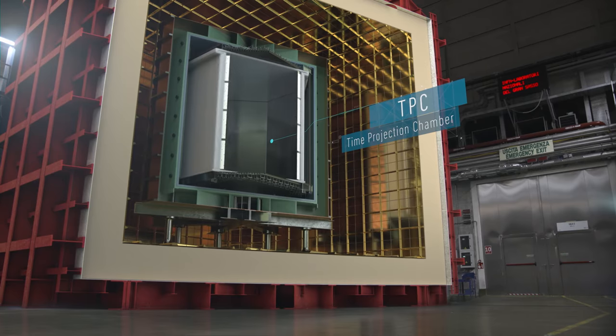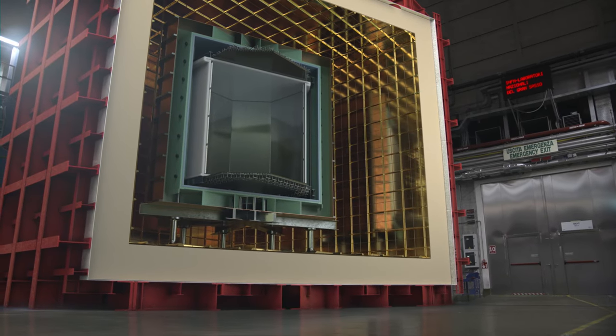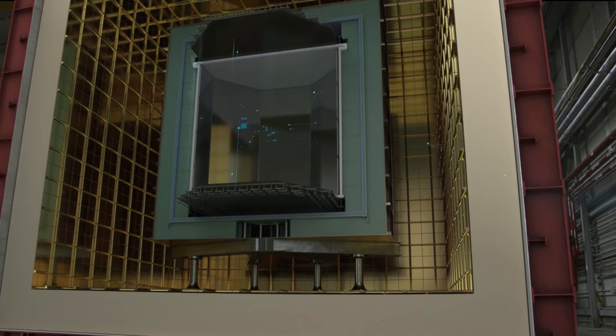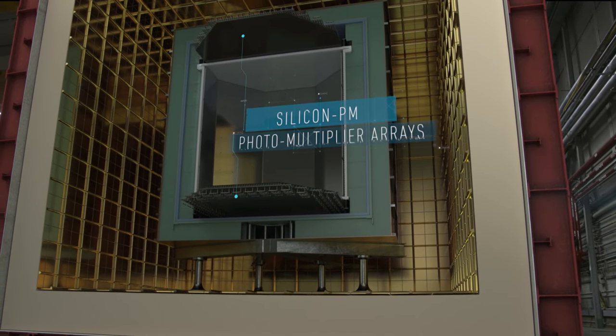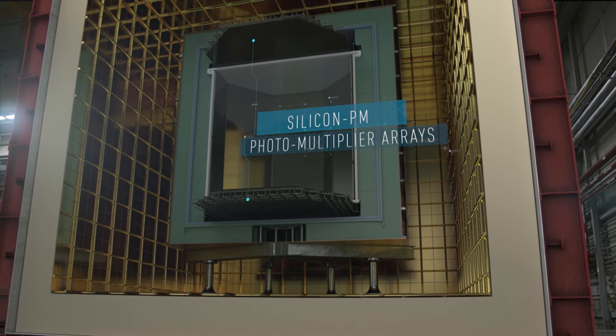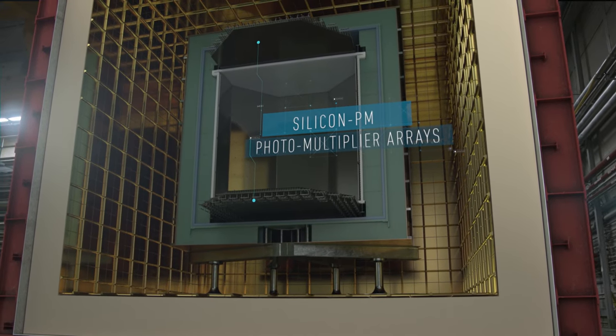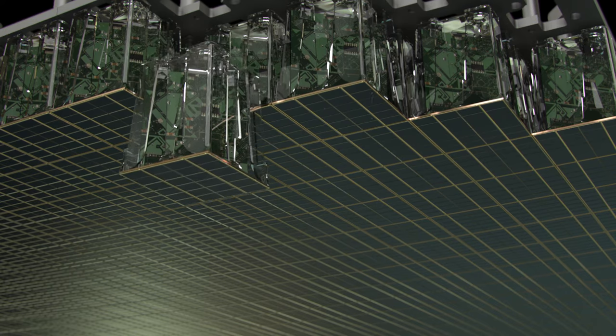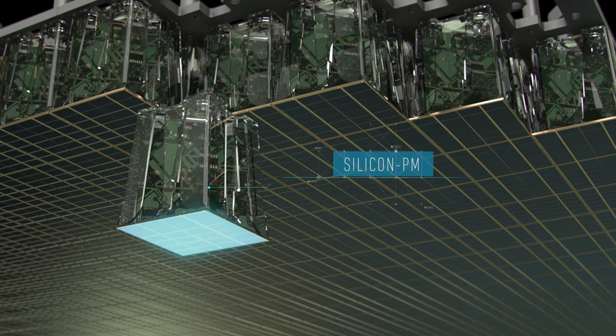which is viewed by arrays of silicon PM photon detectors. To observe the signal of a WIMP-argon collision, the experiment needs to trace with extreme accuracy both the photons and the electrons produced by the impact.